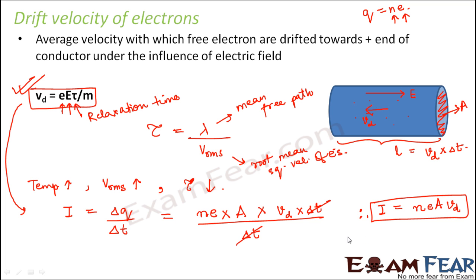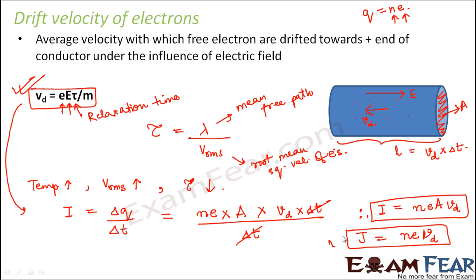You can also write it in terms of current density. Current density J is current per unit area, so dividing I = nEAV_d by A gives J = nEV_d. This is the relationship between current density and drift velocity, and the previous expression I = nEAV_d is the relationship between current and drift velocity.